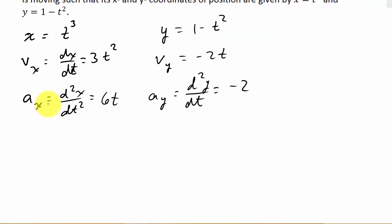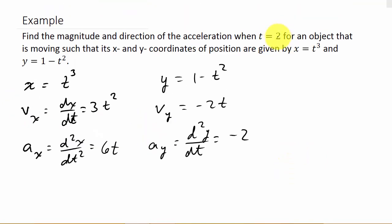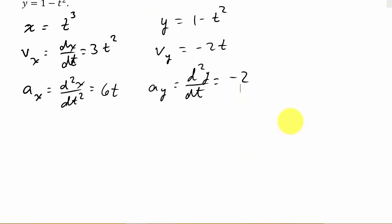Now we need to evaluate a_x and a_y when t is 2. We've got to plug 2 into each of these. So a_x evaluated at 2 is 6 times 2, which gives us 12. And a_y evaluated at 2—well, a_y is always -2, so that's just -2.